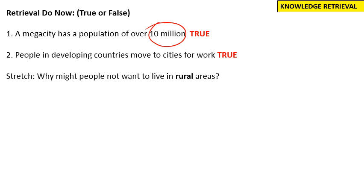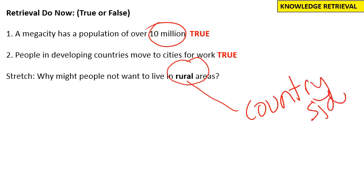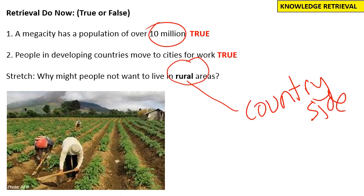Number two: people in developing countries move to cities for work — that is also true, particularly in those newly emerging economies. People are moving from countryside to cities for work. Our stretch question is: why might people not want to live in rural areas? Answers include a lack of opportunity, low-salary jobs such as farming. In a developing country or newly emerging economy, people on low incomes in the countryside may want to leave for the big cities for work in manufacturing, which may pay more, or for education opportunities at universities that don't exist in the countryside.